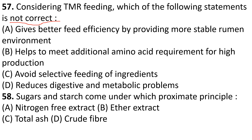Considering TMR feeding, which of the following statements is not correct? TMR feeding provides better feed efficiency by providing a more stable rumen environment. It avoids selective feeding of ingredients and reduces digestive and metabolic problems.